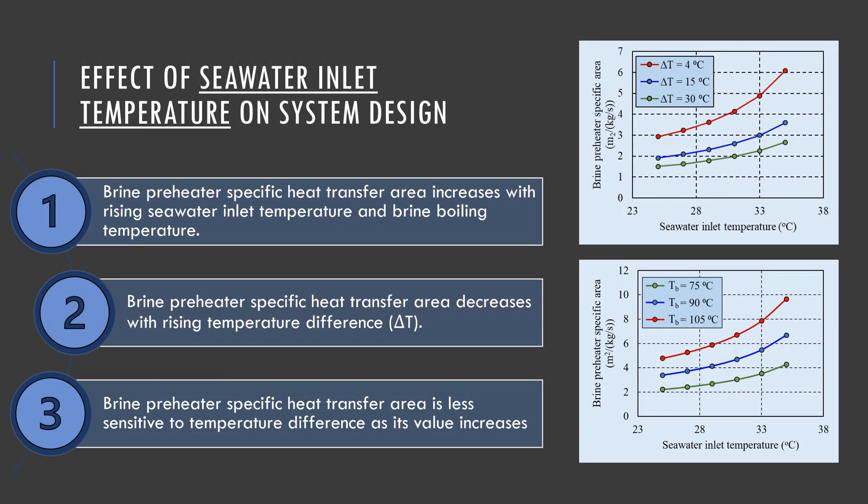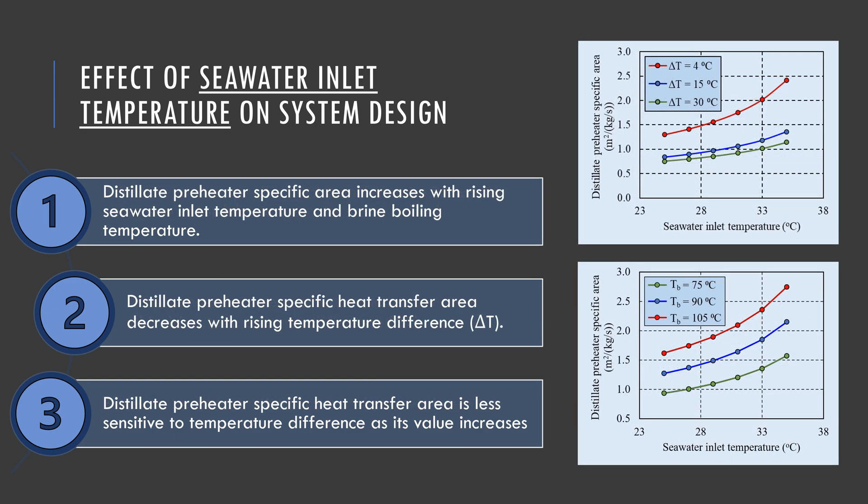Another important factor is the seawater inlet temperature, which affects the brine preheater specific area by increasing it as the seawater inlet temperature increases. However, the specific area decreases with rising temperature lift across the compressor, but increases with rising brine boiling temperature. These outcomes result from the changing mean temperature difference in the preheater affecting its size. For the distillate preheater, its specific area increases with seawater inlet temperature and brine boiling temperature, whereas it decreases with rising temperature lift across the compressor — similarly due to the changing mean temperature difference in the distillate preheater.